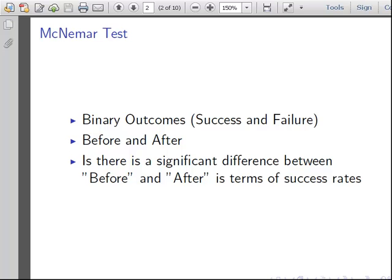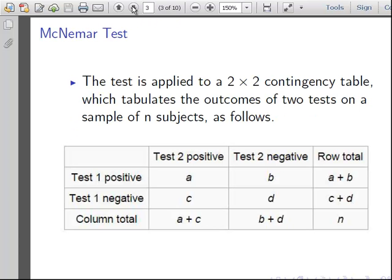This is like the binomial distribution, success and failure, positive negative, yes no, true false. So that is binary outcomes. Let's also look at the basis of before and after, because quite often this test is used in medical data. And is there a significant difference between before and after in terms of success rates? Now this is different from the ordinary proportions test because the populations are not independent in this case.